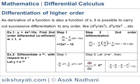Example 1: y is equal to 4x³ minus 10x. Find the second order differentiation coefficient with respect to x, that is d²y/dx². In Step 1, we first find the first derivative: dy/dx is equal to d/dx of (4x³ minus 10x), which is equal to 12x² minus 10.